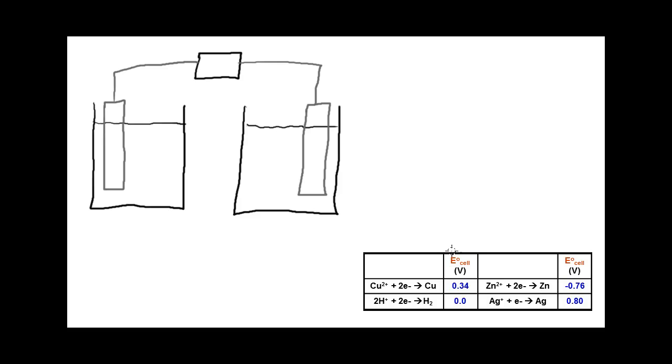Imagine I wanted to construct a voltaic cell with two of the four half reactions shown in this table that had the maximum cell potential I could get. I want to show you how you would make that decision and then how you can relate that cell voltage to the thermodynamic favoredness measured by the delta G change.